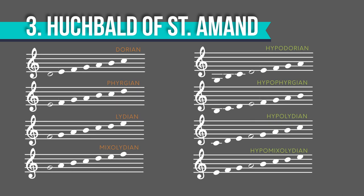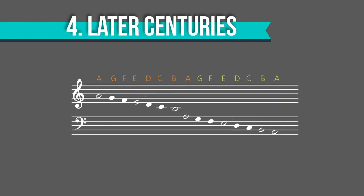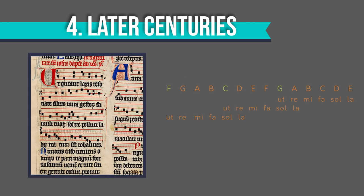Hucbald mapped the scales onto particular pitches, with the four authentic ones being mapped onto D, E, F, and G. As the centuries rolled on, the church modes continued with the same labels, with Guido adding a new lowest note somewhere in the 11th century — he called it gamma. In Guido's system, because of this hymn, you could start on either C, F, or G. But we only had naturals at this point — no accidentals.